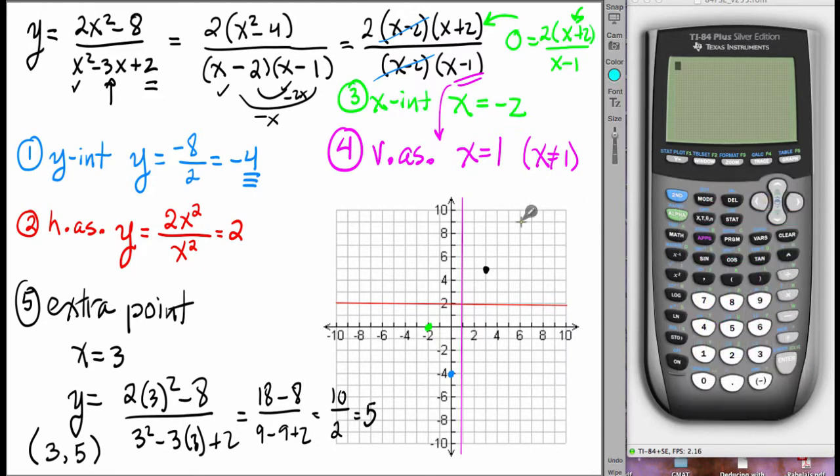Now the sixth feature, which didn't occur in the first example, which is referred to often as a hole, that is associated with the two factors in the numerator and denominator which cancelled. We previously saw that x minus 2 and x minus 2 were factors that occurred in both the numerator and denominator. When you find such a combination, that means there will be, it's called a discontinuity technically, a hole occurring at an x value of 2 and at an unknown y value.